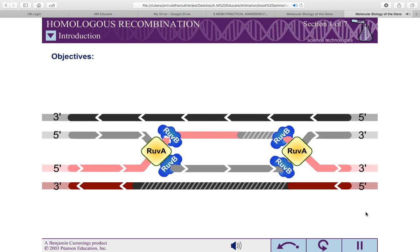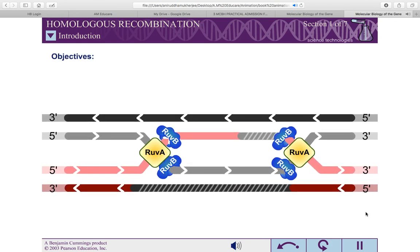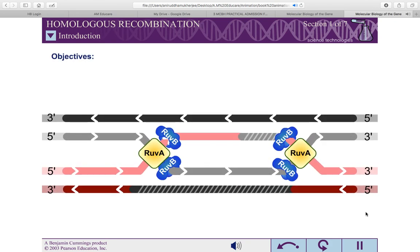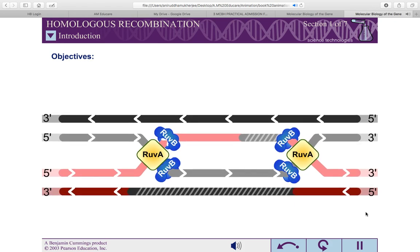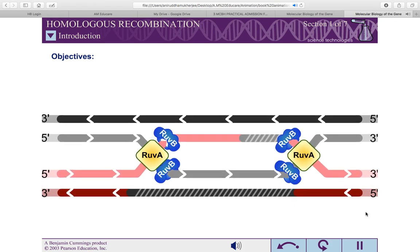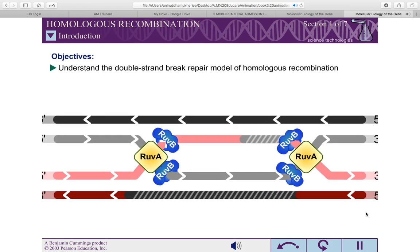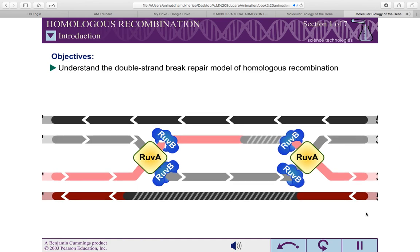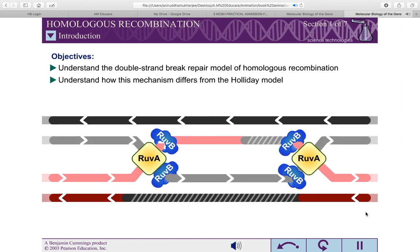When you have completed this exercise, you should understand the double strand break repair model of homologous recombination, understand how this mechanism differs from the Holliday model, and understand the cellular functions of homologous recombination.